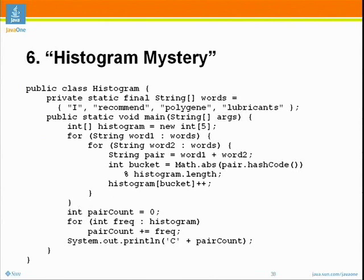That was a fine problem. Now I have one for you: 'Histogram Mystery.' What we do in this program is we have a list of words — 'I recommend polygene lubricants' — and we make a histogram out of these words. The histogram is of length 5, and we make it by iterating over all the word pairs in a doubly nested loop. We pair the words together, compute their hash code, choose a bucket based on the hash code, and increment that bucket.